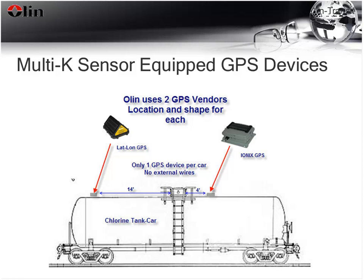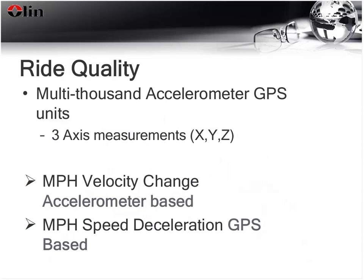GPS data is used primarily for two purposes: ride quality and security. Several thousand GPS units all have accelerometers detecting three axes — X (side), Y (forward/backward), and Z (lifting). The Latlon units provide both the 10 Hz filtered values and the fast 100 Hz filtered values.